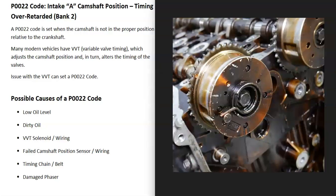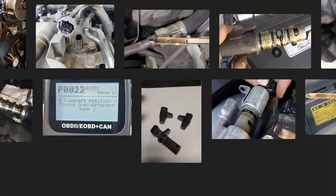The last possible cause is a bad phaser or actuator. These are what the timing chain or timing belt ride on and are part of the variable valve timing system — they work with the variable valve timing solenoids to advance or delay timing depending on what's needed. The most common problem with variable valve timing is going to be those solenoids, but sometimes there can be issues with these phasers as well.